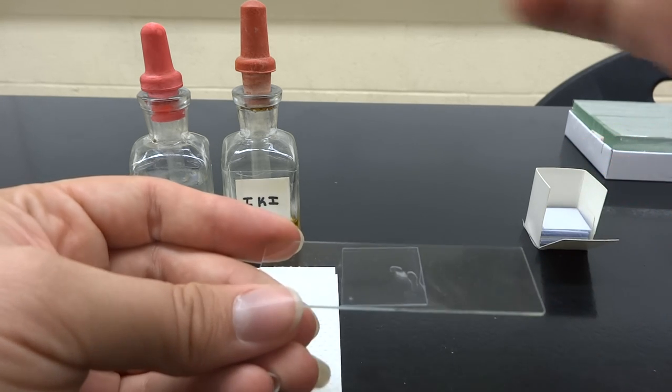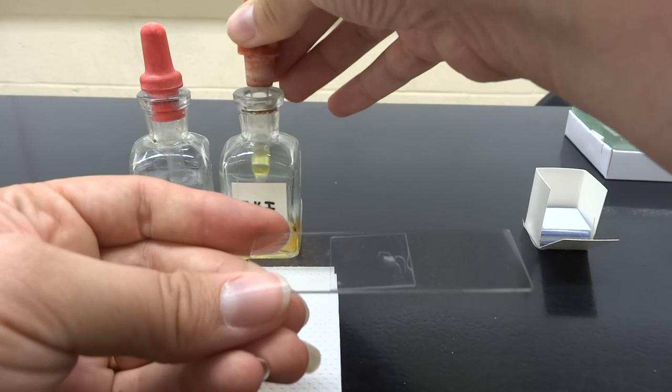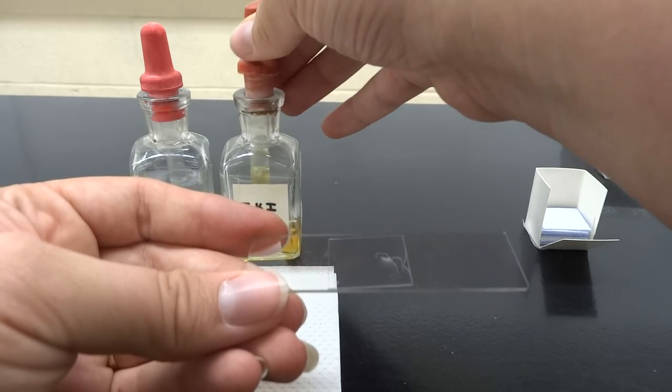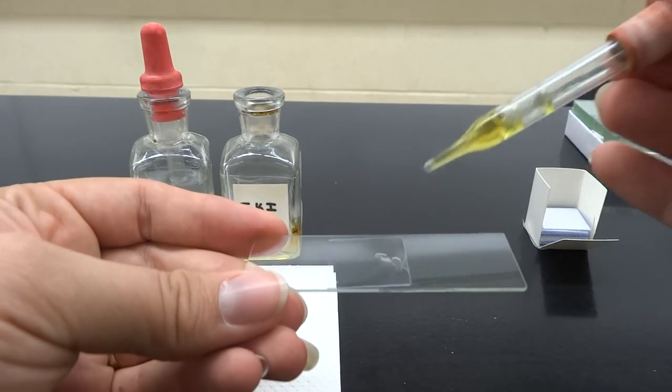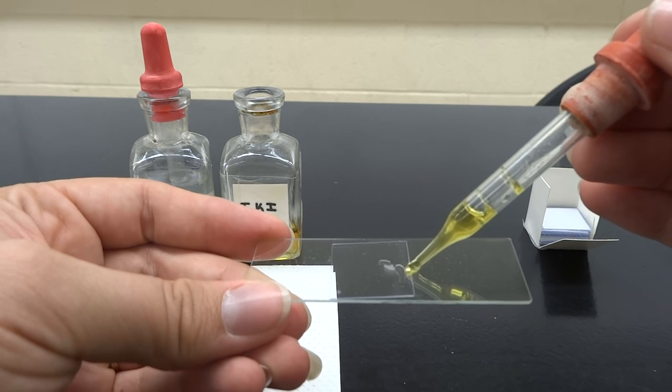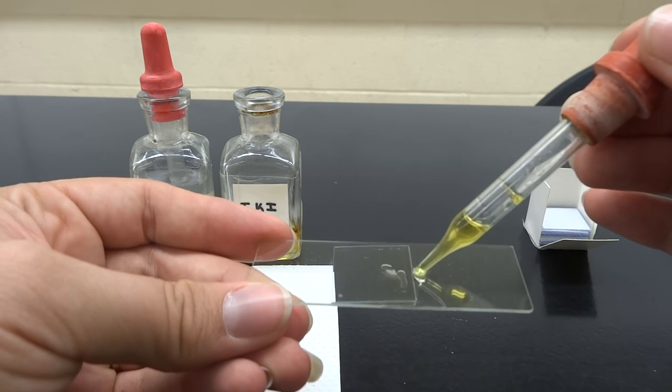So we're going to take the iodine and we're going to place it right here along the side of our cover slip.